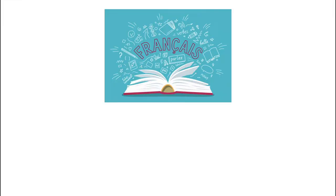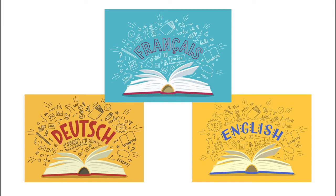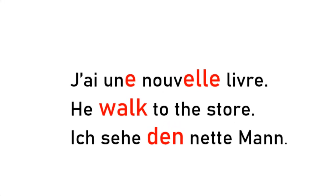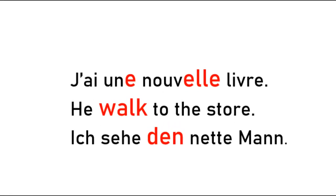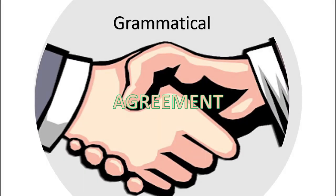If you're a native speaker of French, English, or German, the errors in the above sentences most likely leap off the screen at you. They're all examples of grammatical errors of agreement, in which a grammatical word doesn't match with some other grammatical feature of the sentence.